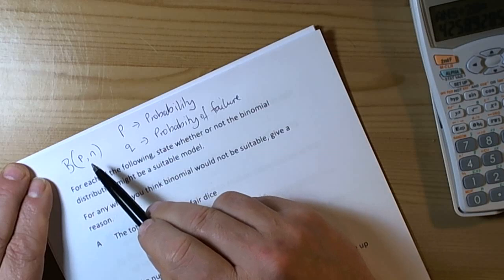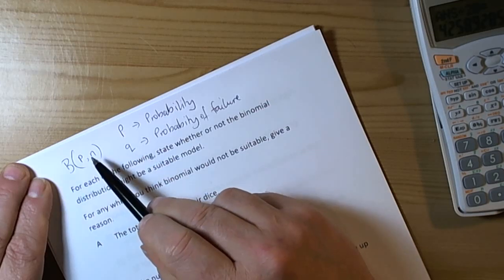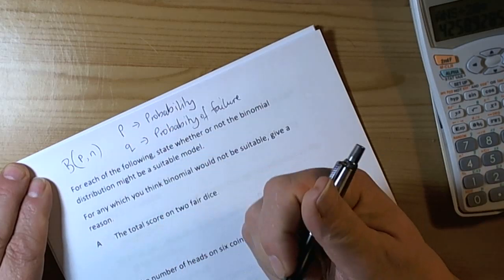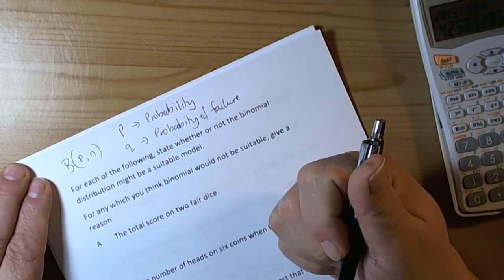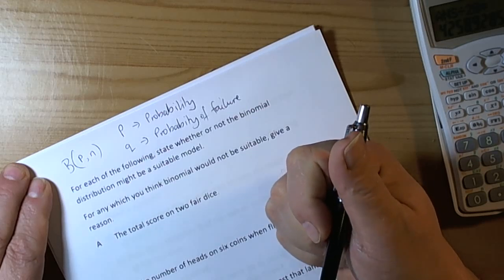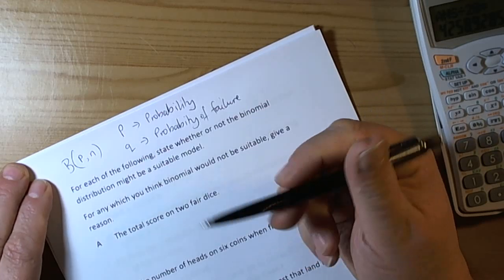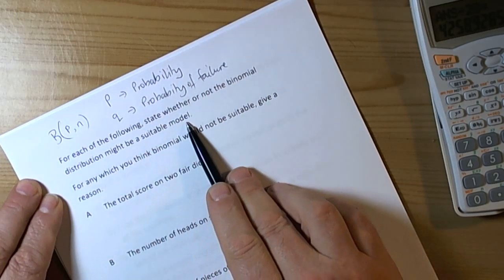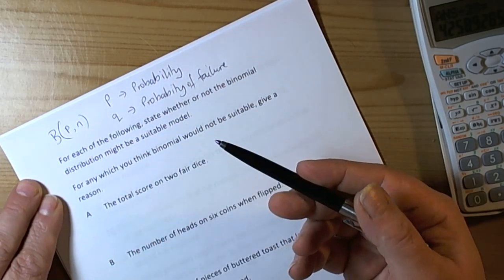The probabilities must be independent of each other and they can't change throughout the experiment. So we need two outcomes, a fixed number of trials, and the probabilities are independent and they don't change throughout the trials. When this question says whether or not the binomial distribution might be a suitable model, we have to check those conditions.